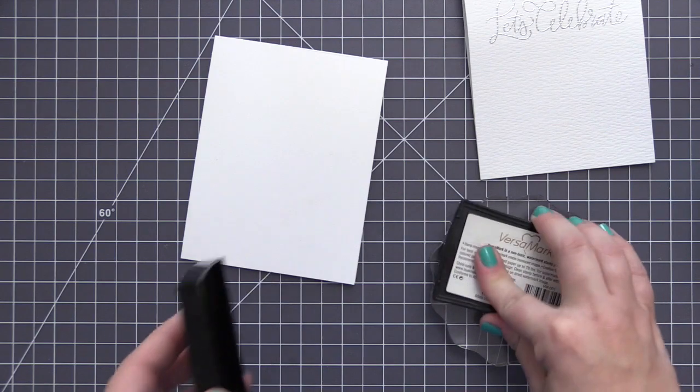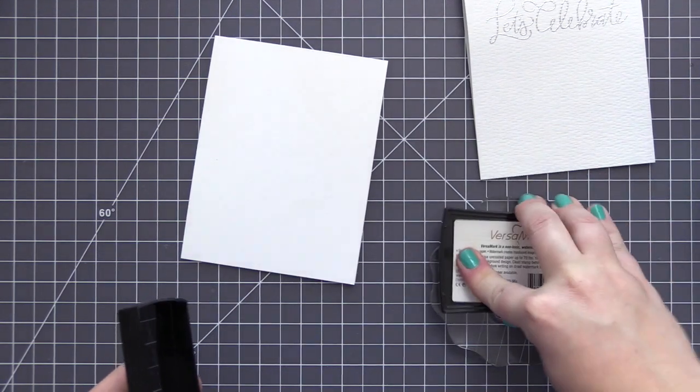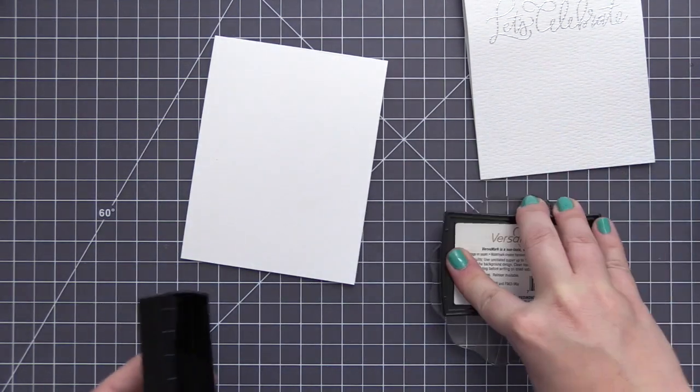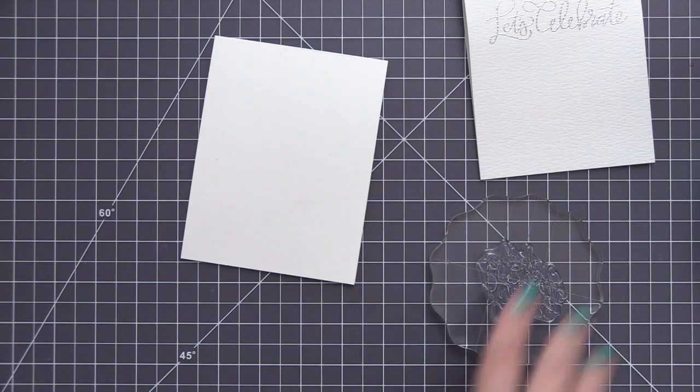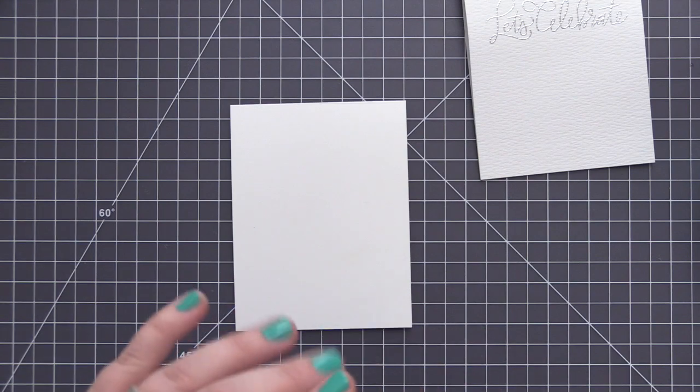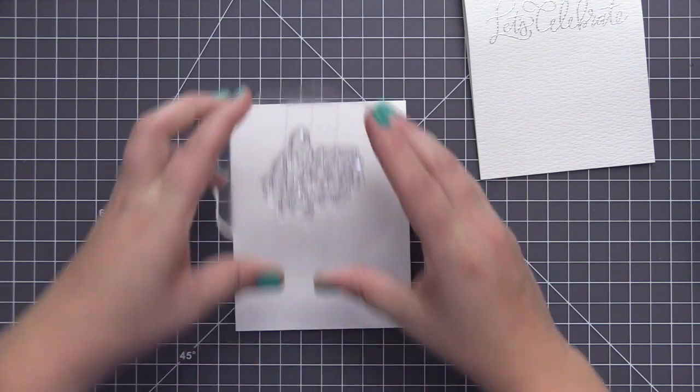So if you do do that, you just really want to make sure you use a lot of ink and press down really well just to make sure that all of that inked image transfers. Especially with this sentiment because it's very intricate. You just really want to make sure that you get all of that stamped image onto the card base.